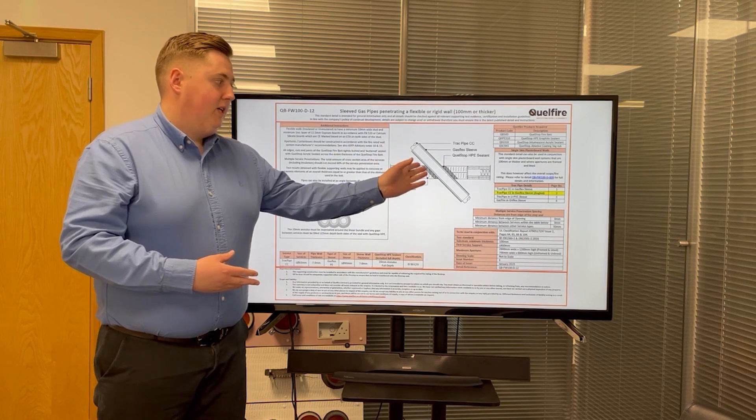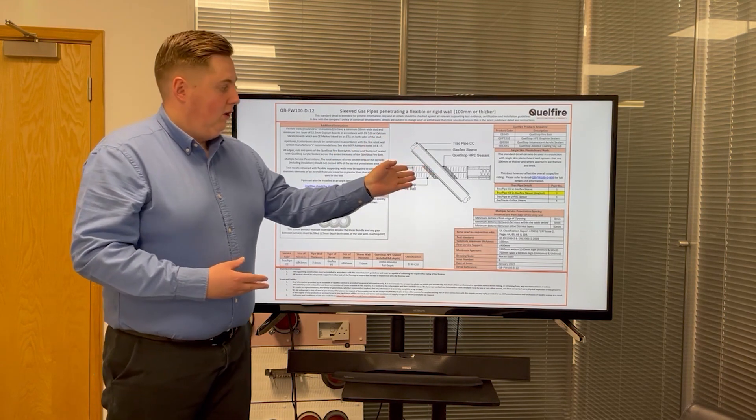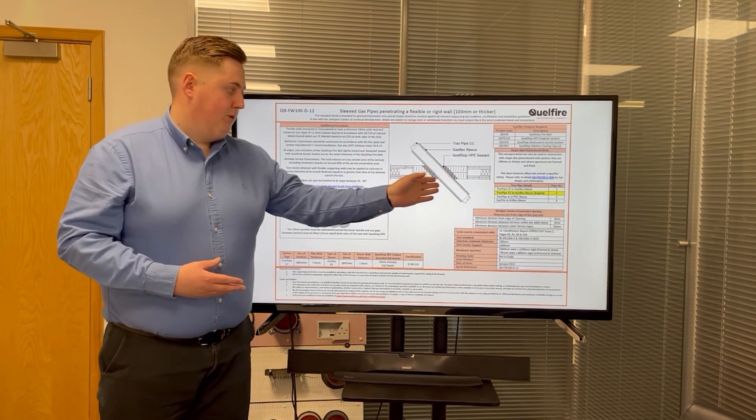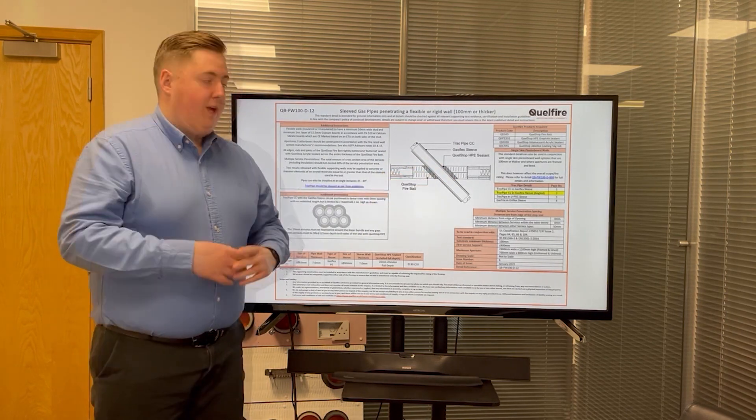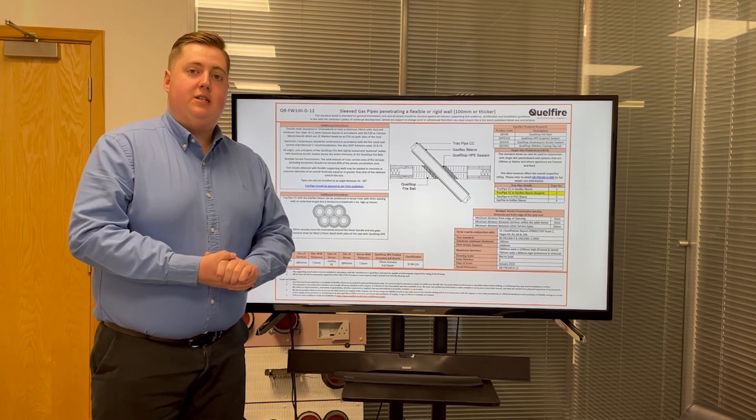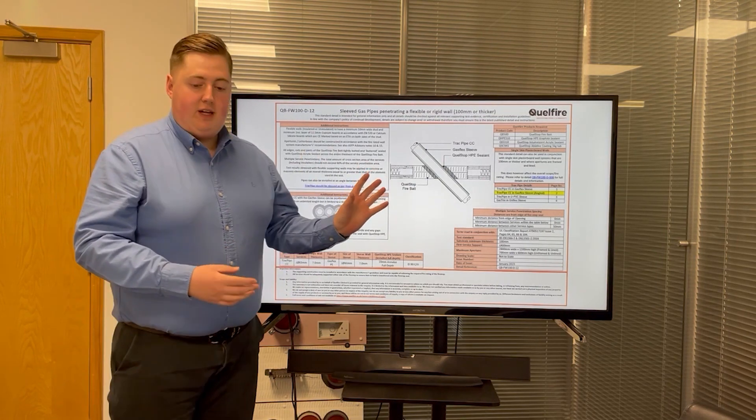The pipe or service can be at any angle up to 45 degrees, so between 90 and 45 degrees in both orientations. We have tested multiple different services, including the sleeved gas track pipe.